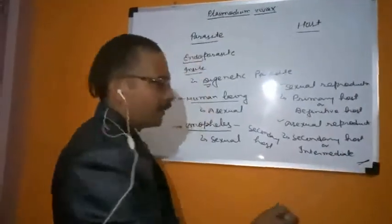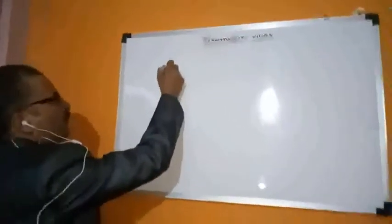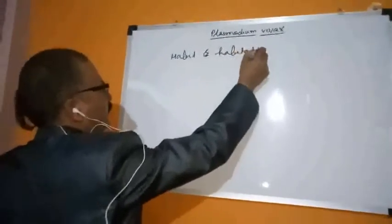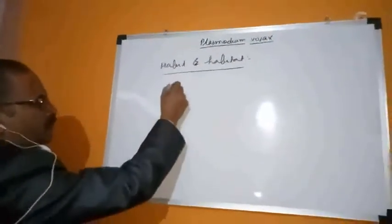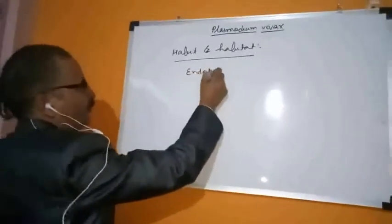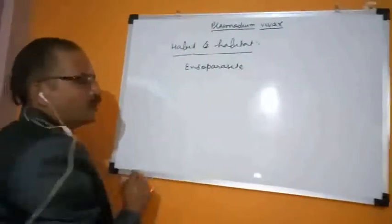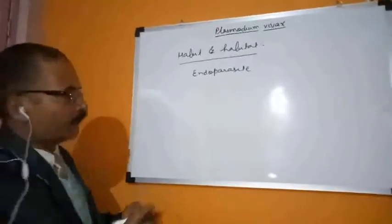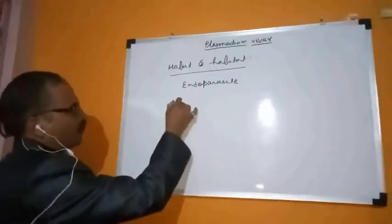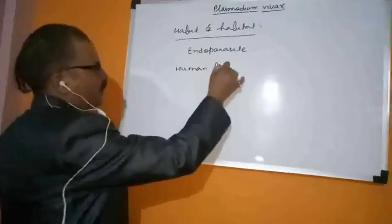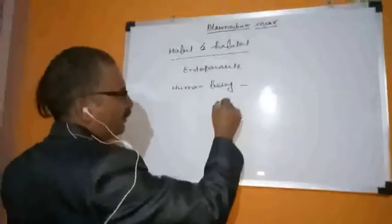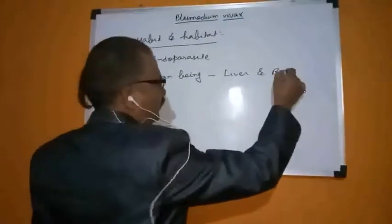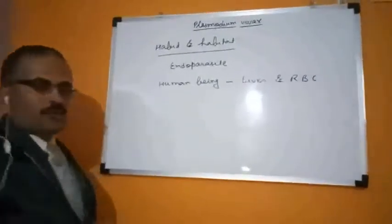Now we are talking about the habit and habitat of Plasmodium vivax. We know that Plasmodium is an endoparasite — that is its habit. Since it is a digenetic parasite, it requires two hosts to complete its life cycle. In the human being, it can be found in two places: the parenchymal cells of the liver and in the red blood cells (RBCs).